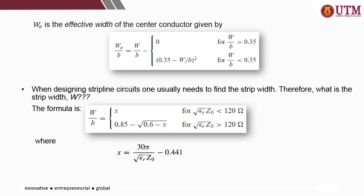The effective width W_e is needed because the strip line lies between two ground planes — ground plane above and below — with dielectric material in between. Due to the different properties of the materials that the strip line is exposed to, we need the effective width W, which accounts for the surrounding materials and environment around the strip line.